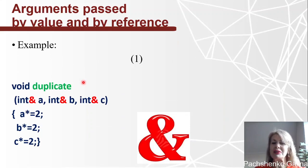So let's consider this example where we pass arguments by reference. We need to use this ampersand sign that goes after the type of the parameter. Let's consider this is our void function that is called duplicate. It has three parameters: parameter a, parameter b, and parameter c. Types of parameter a is int, type of parameter b is int, and type of parameter c is int. And we put ampersand sign after our types.